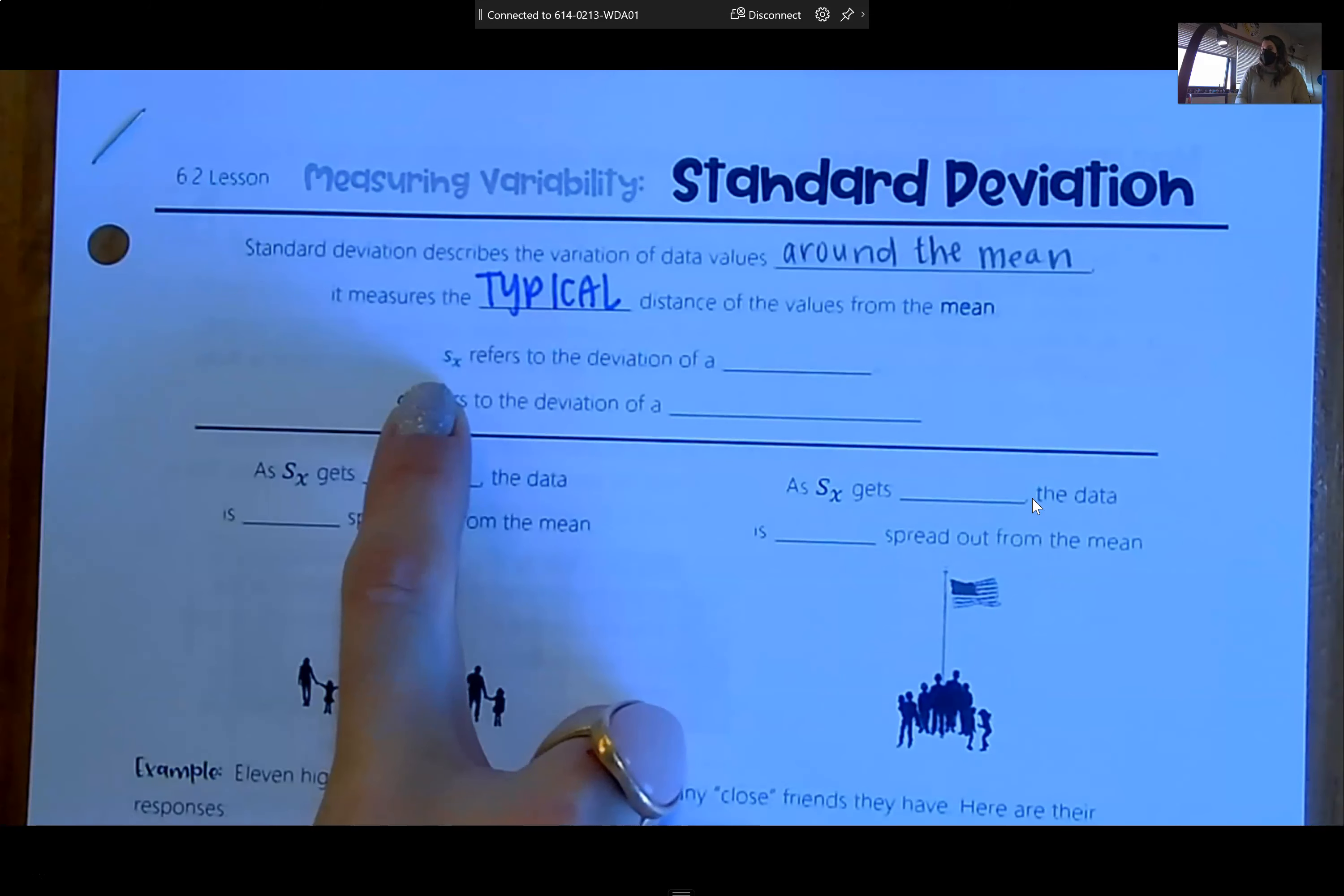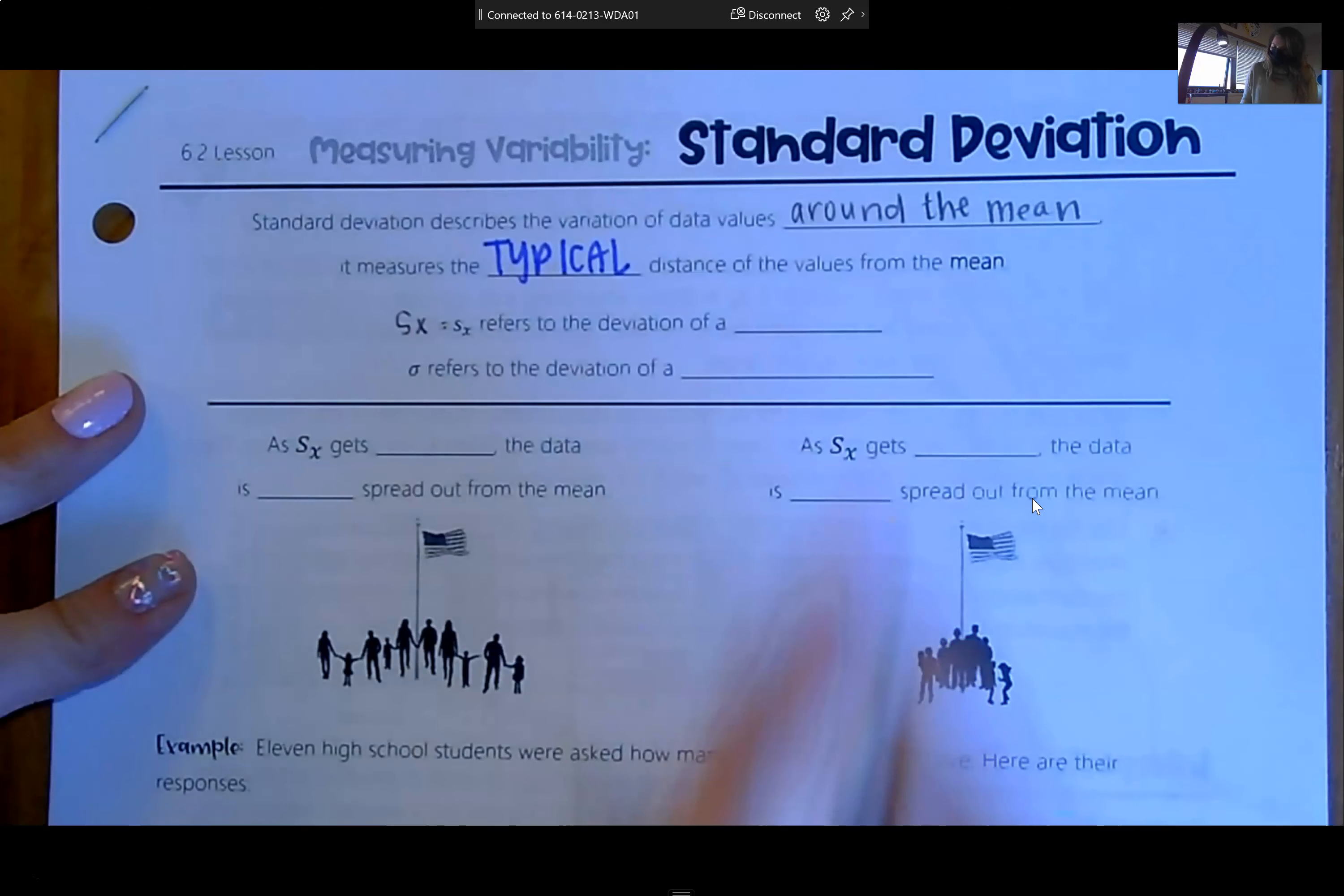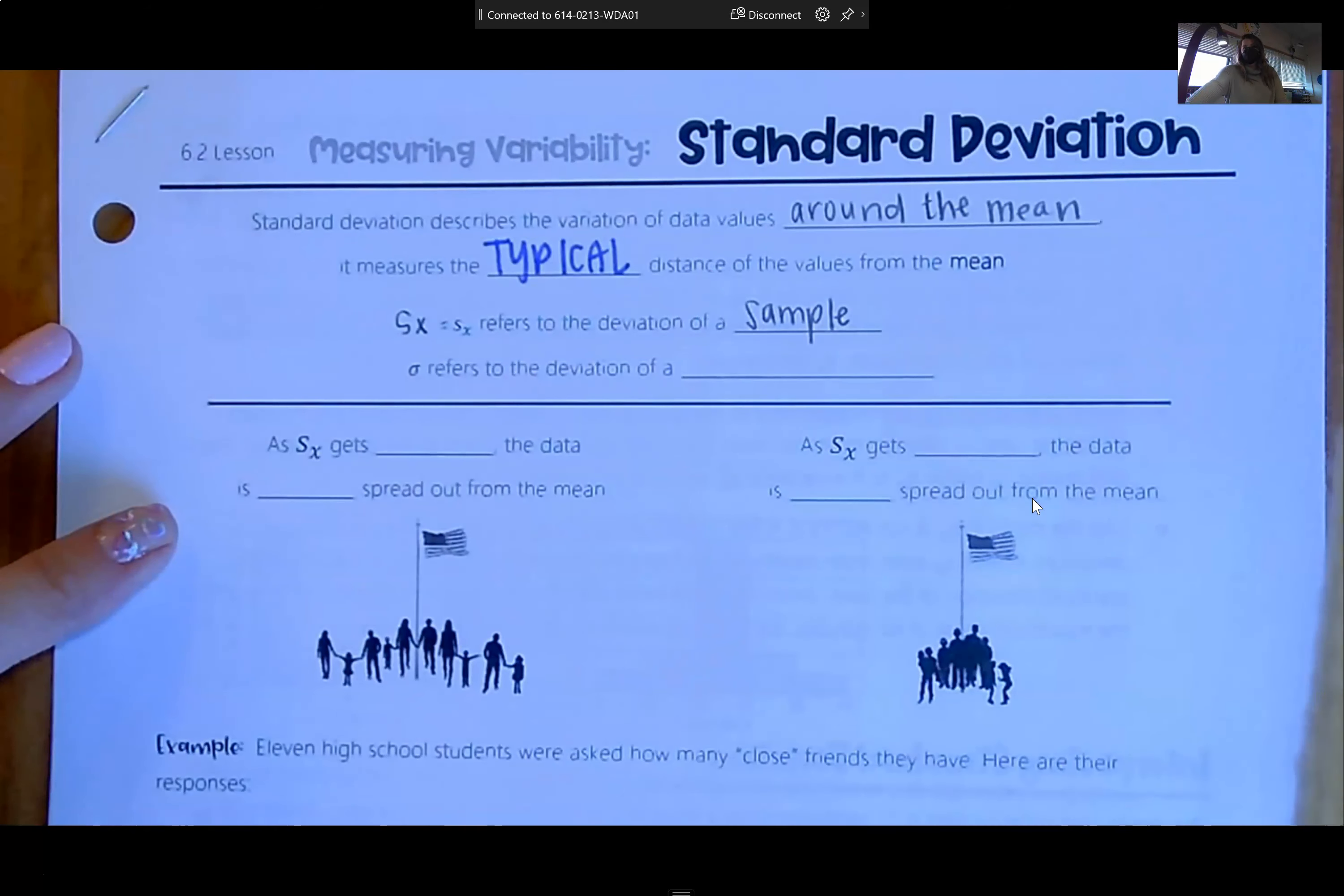It measures the typical distance of the values from the mean. S sub X, which in our calculator shows up as capital SX, is the standard deviation of a sample, which to us is just a data set. S sub X is when you're given a data set, a sample, and you use your calculator or calculate by hand the standard deviation.